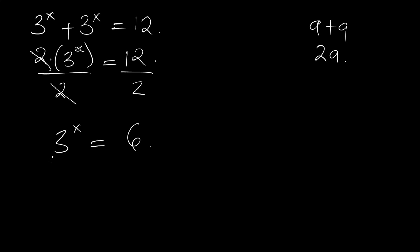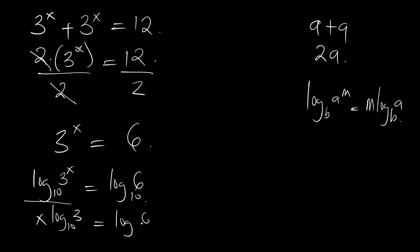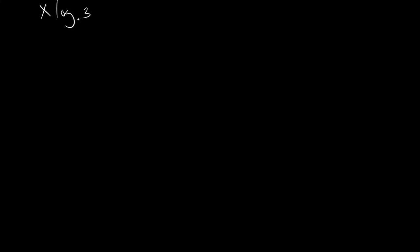Now you can take the log base 10 on both sides. So log of 3 to the power x, base 10, is equal to log 6 base 10. According to the law of logarithms, if we have log a to the power m, base b, this is simply m times log a base b. Applying that rule here, you now have x times log 3 base 10 equal to log 6 base 10.